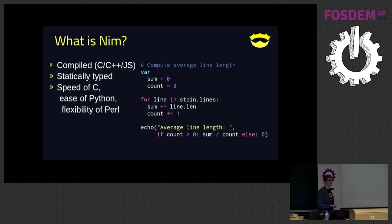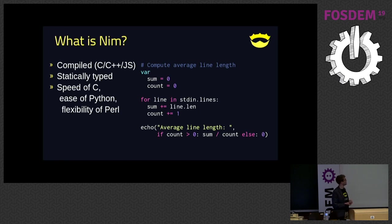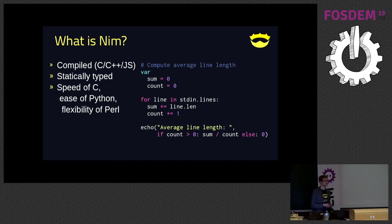When it was created, it was meant to be sort of a mix between the speed of C, the ease of Python — you can see a syntax example on the right here — and the flexibility of Perl. And it's this flexibility component with the metaprogramming stuff that I'm going to talk about today.